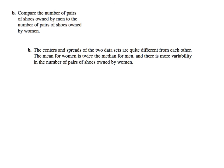As you can see, women own more shoes. The centers and spreads of the two data sets are quite different from each other. The mean for women is 14 and the mean for men is 8 — the mean for women is almost twice the median for men. There is more variability in the number of pairs of shoes owned by women, so women have a farther range of what they own.